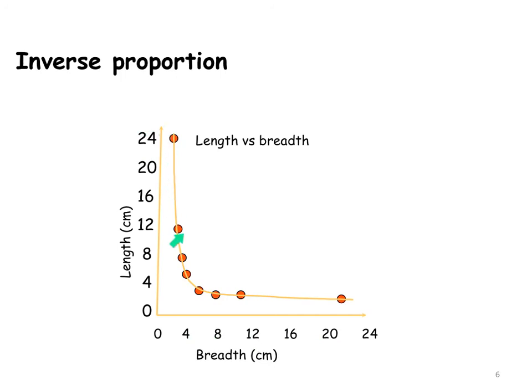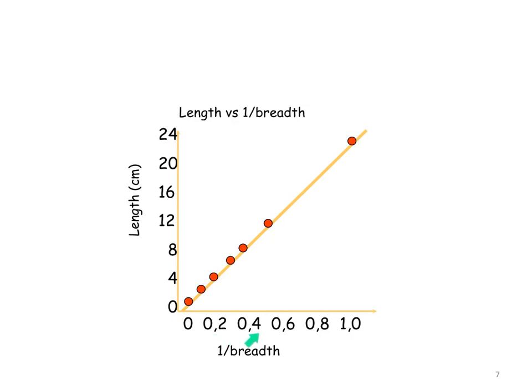This looks like it's an inverse proportion, but how do I check? I will take one of the values and invert them, like the breadth, and see how it comes out. When I have the inverse of the breadth, I then get a straight line. And that tells me that I have an inverse proportion.